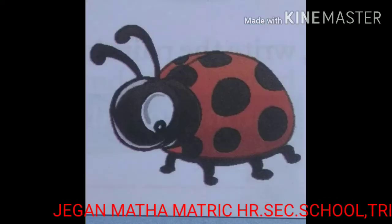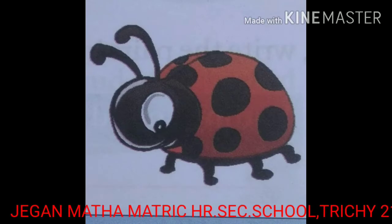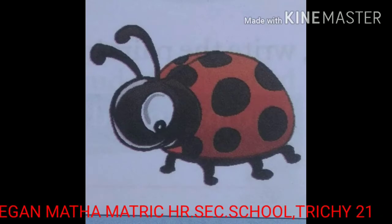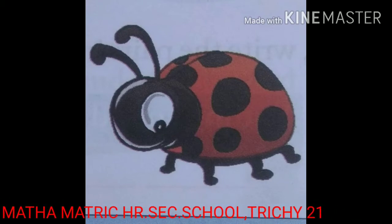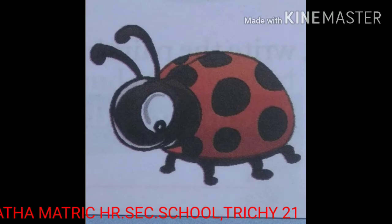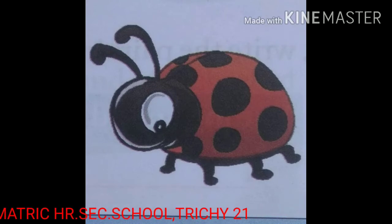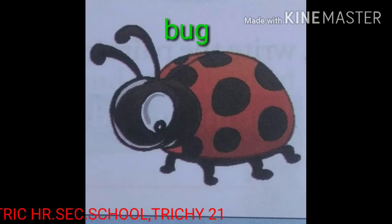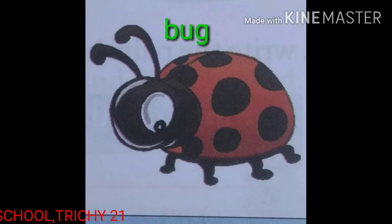Shall we learn Ug family words? See the picture. What is this? This is a bug. Bug means a small insect. Now see the spelling: B, U, G — Bug.